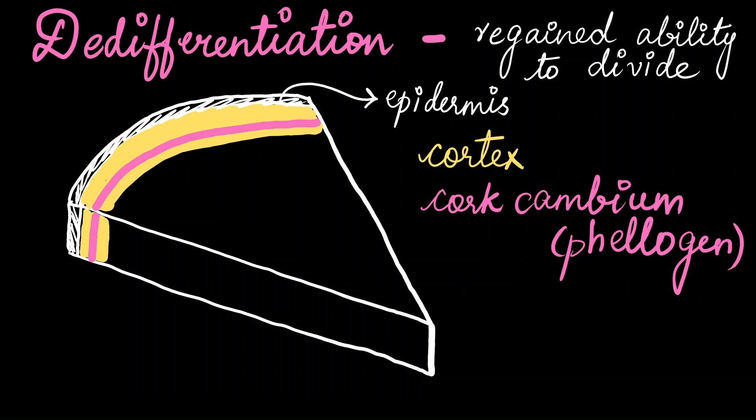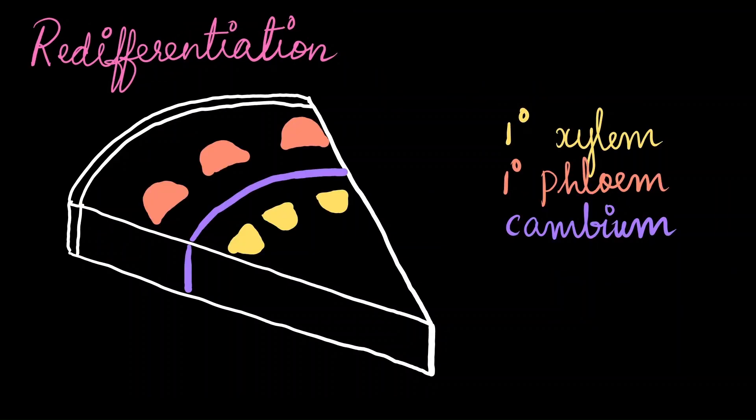Basically, it means that the differentiated cells have regained their meristematic activity. So the cells that are produced by de-differentiated meristems now have to have specialized function again, right? Because right now, they have lost the function that they initially had, and now they have to acquire a new function. This process is called re-differentiation.